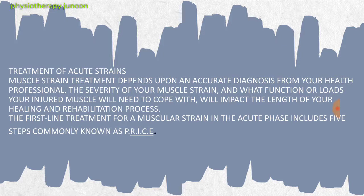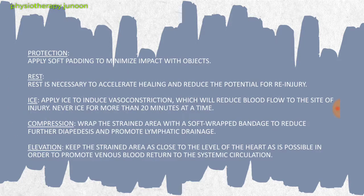The first-line treatment for a muscular strain in the acute phase includes five steps commonly known as PRICE. First is Protection — applying soft padding to minimize impact. This is important because repetitively using the muscle causes more stress and overload, which can progress from a mild to a moderate or severe injury. Protection shields the patient from advancing to a worse phase.